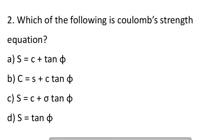Next question: which of the following is the Coulomb strength equation? Option A: S equal to C plus tan phi. Option B: C equal to S plus C tan phi. Option C: S equal to C plus sigma tan phi. Option D: S equal to tan phi. So the answer is C, S equal to C plus sigma tan phi.